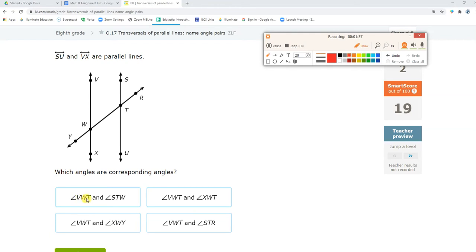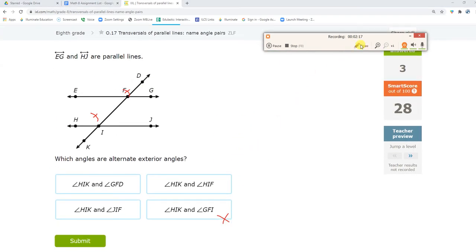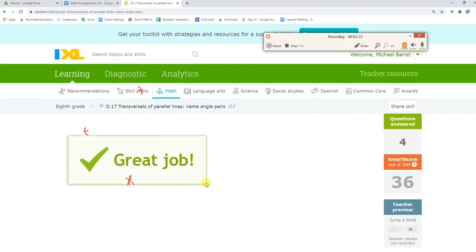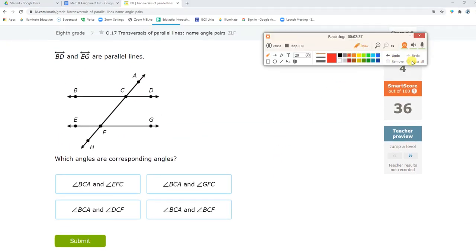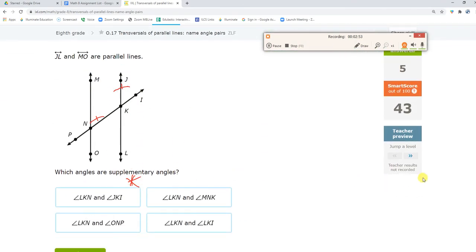Corresponding angles. Okay, VWT. His corresponding VWT is right here, STR. Those are corresponding angles. STR is this one. Alternate exteriors. Okay, HIK. His alternate exterior is right here, DFG. Corresponding BCA. His corresponding is right here, which is EFC. And let's jump a level. Oh, that was a big jump to 55.